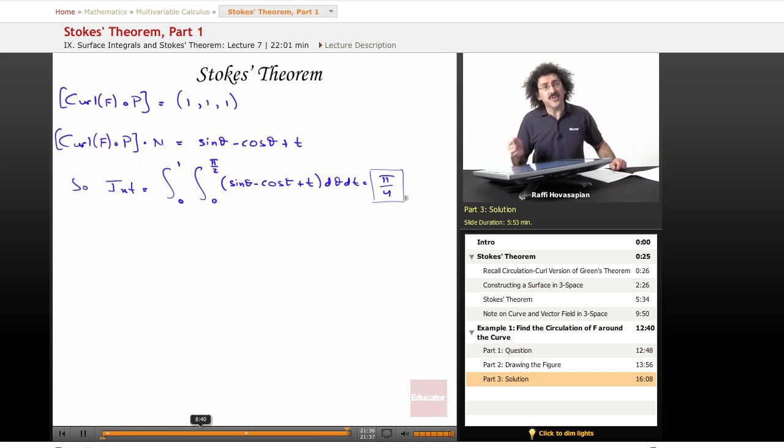There you go. So the circulation of this vector field happens to equal pi over 4. It is positive. What this means is that this vector field is actually rotating on that surface. That's what we've done. That's what Stokes Theorem does. Thank you for joining us here at educator.com for our first part of the discussion of Stokes Theorem. We'll see you next time for the second part.